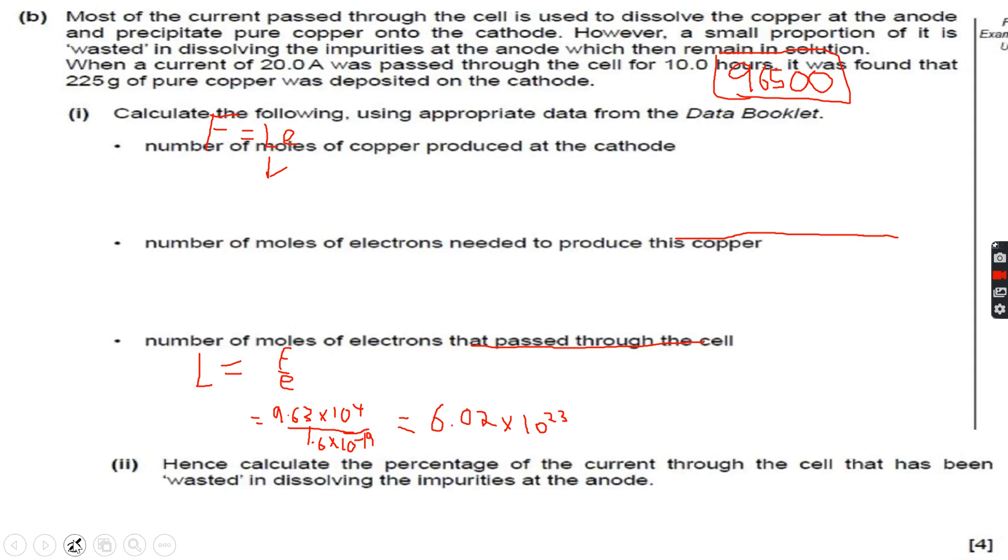Now let's do another question. Most of the current passed through the cell is used to dissolve the copper at the anode and precipitate pure copper onto the cathode. We know that they're talking about copper. However, a small proportion of it is wasted in dissolving the impurities at the anode which then remain in solution.